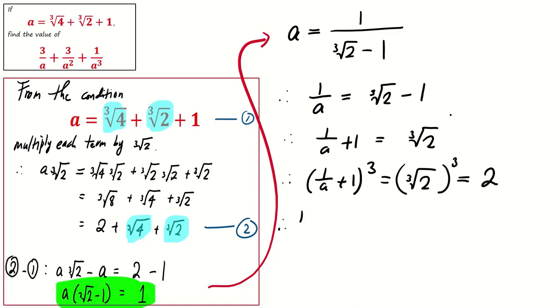When we expand the left-hand side, we obtain 1/a³ + 3/a² + 3/a + 1. The right-hand side is 2. Therefore, we conclude that 3/a + 3/a² + 1/a³ is 2 minus 1, which equals 1.